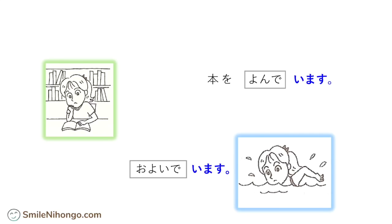You can also add more information such as where she's doing it. For example, if you want to say 'she's reading a book at the library,' then you can say 図書館で本を読んでいます. And if you want to say 'she's swimming in the ocean,' then you can say 海で泳いでいます. Since these are the places that Mary-san is doing these actions at, you still have to use the particle で, the place-of-action marker.